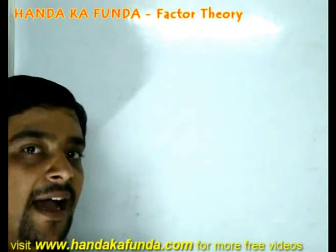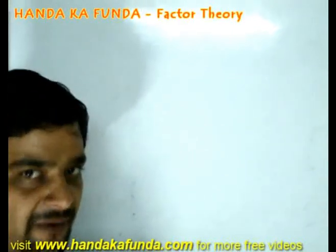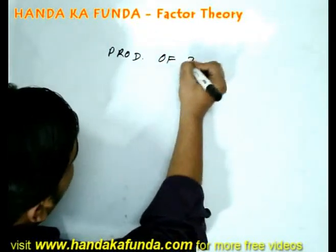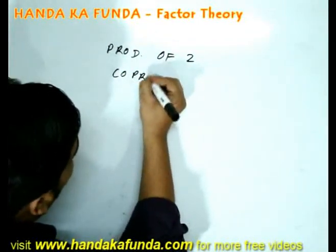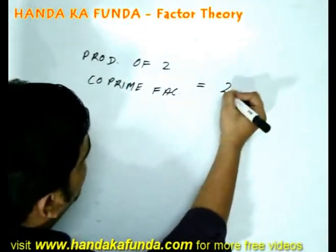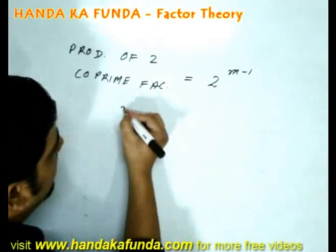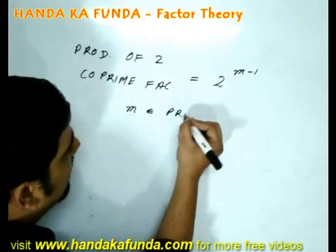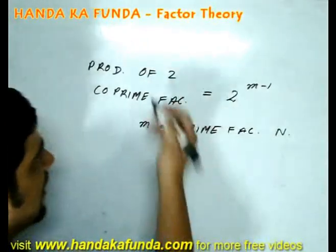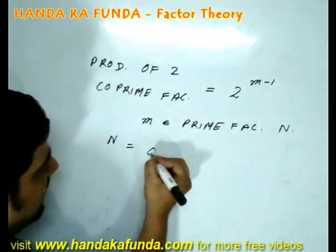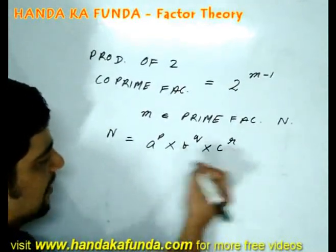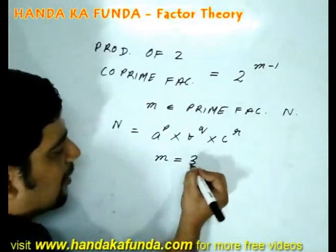What will happen if the question says in how many ways can they be expressed as a product of 2 co-prime factors. Then it will be 2 to the power of m minus 1, where m is the number of prime factors that my number has. In the previous case, remember, they were a to the power p into b to the power q into c to the power r. In this particular case, m is equal to 3.